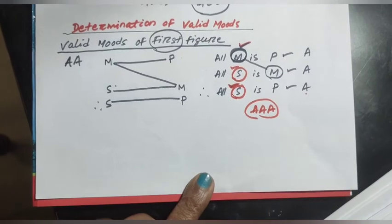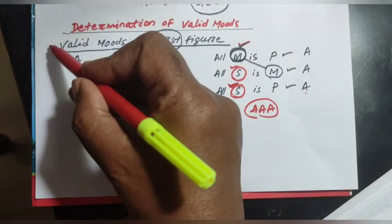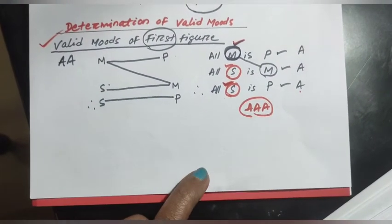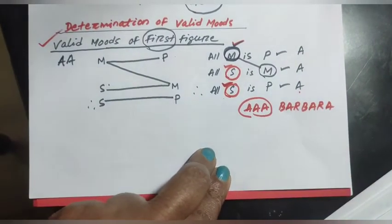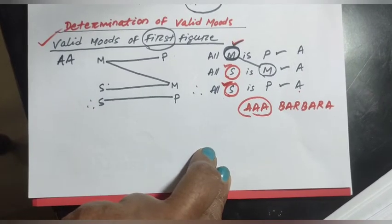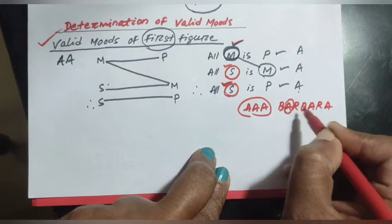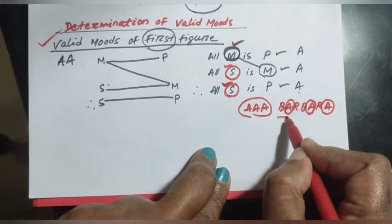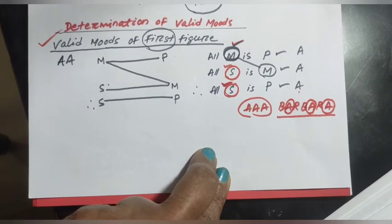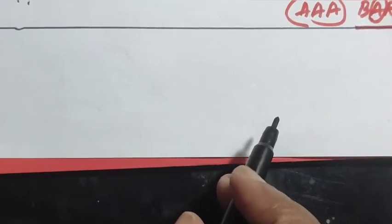This is a valid mode of the first figure and it is called Barbara. Barbara stands for the three A propositions: the first A for the major premise, the second A for the minor premise, and the third A for the conclusion. So in the first figure, AAA is a valid mode named Barbara.